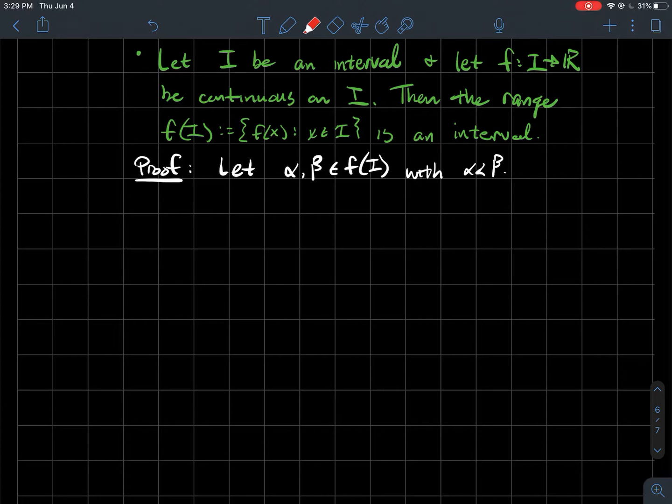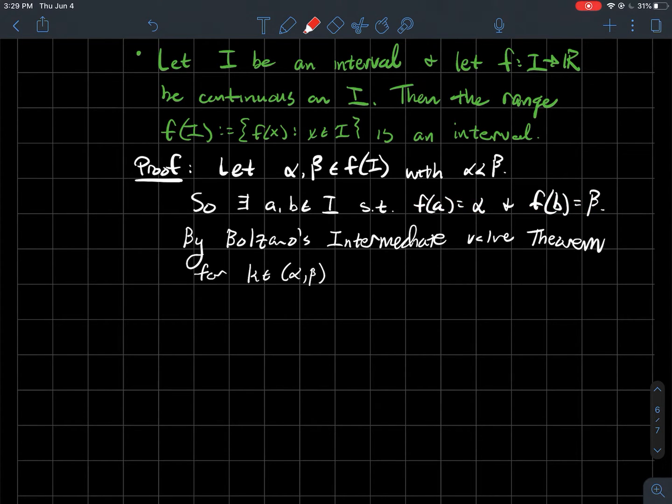So how would we prove this? Let's take two elements alpha and beta that are in the range f(I), and suppose alpha is less than beta. If you're in the range, that means those alpha and beta are the outputs of two things from your domain I. So there should exist a little a and little b, such that f(a) should be alpha and f(b) should be beta. We'll apply Bolzano's intermediate value theorem again. If I think about any number between alpha and beta, since alpha and beta were outputs of my function, then any number between them should be outputs too.